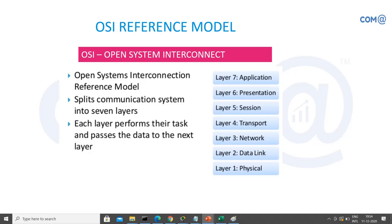Thanks to this standardization, we can now use devices from any manufacturer — for example, a company using a Cisco router can switch to a Juniper router or firewall, or even have a combination of Cisco devices at one site and Juniper devices at another. Communication and even VPN connections can be established between them. That is the reason for the OSI reference model, which everyone follows when manufacturing devices.